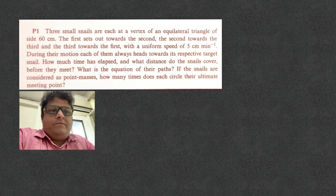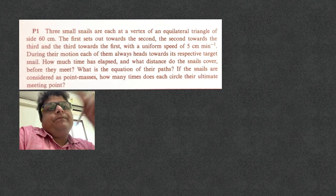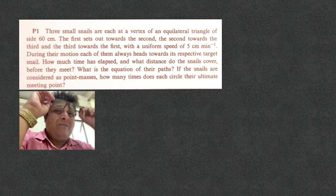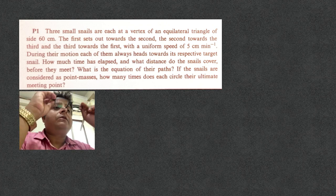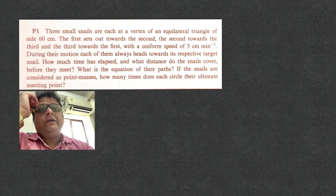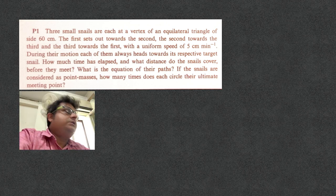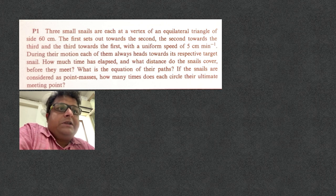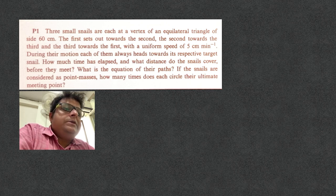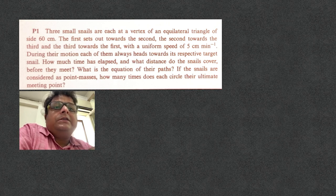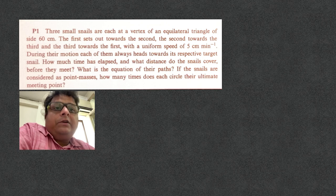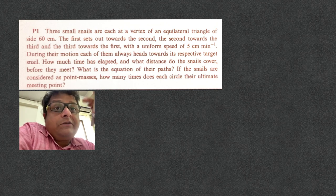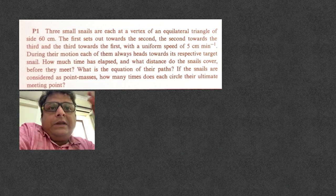This problem involves an equilateral triangle. Three snails are each at a vertex of an equilateral triangle of side 60 cm, and each one chases the other — the classic pursuit problem. The question has three parts: find the equation of their paths if snails are considered point masses, how many times does each circle their meeting point, and how much time has elapsed and what distance do the snails cover before they meet. That last part is also in HC Verma.